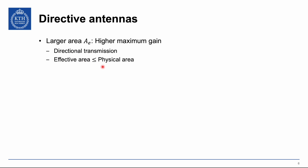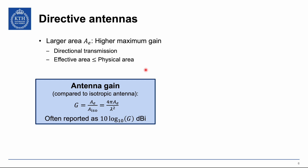Here is an example about antenna gains — how directive or how strong an antenna is compared to an isotropic antenna. Antenna gain G is the effective area of the antenna divided by the effective area of an isotropic antenna (λ²/4π). We often report gain in dB relative to an isotropic antenna, which is why it is called dBi.